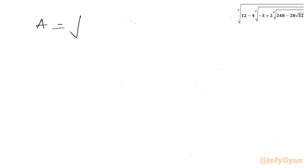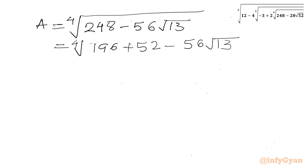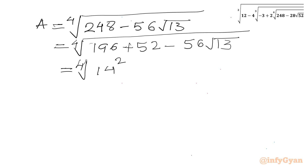So A equals the fourth root of 248 minus 56 square root of 13. Now I will split 248 as 196 plus 52, then minus 56 square root of 13. 196 can be written as 14 squared, and 52 is 13 times 4, so it equals (2√13)².